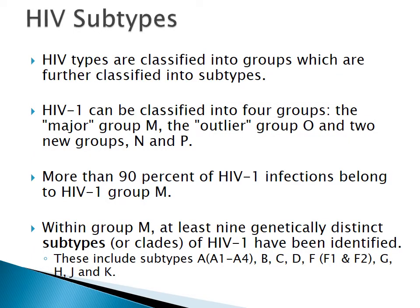For HIV-1, there are three to four major groups: Group M (major), Group O (outlier), Group N (non-O, non-M or new), and Group P. Group O, N, and P were first reported in Cameroon, which neighbors Nigeria. Group M stands for major because most subtypes belong to it. Group O was named outlier because it differed from M, and Group N was named for being neither O nor M. Group P followed the alphabetical order.